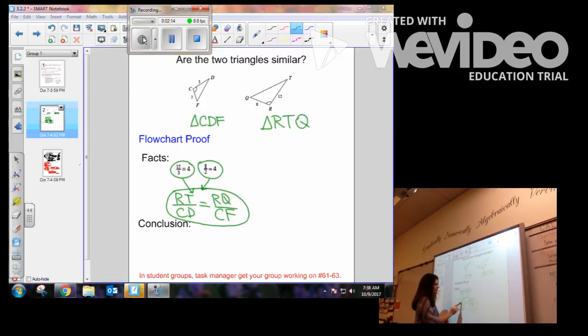Now notice this proportion is equal, so we have just shown that two sides are proportional. Notice also when I label them, see how it's R, T, so in the triangle, R, T, and then C, D. Notice the order, C, D. R, Q, first, last, C, F, first, last. Awesome.